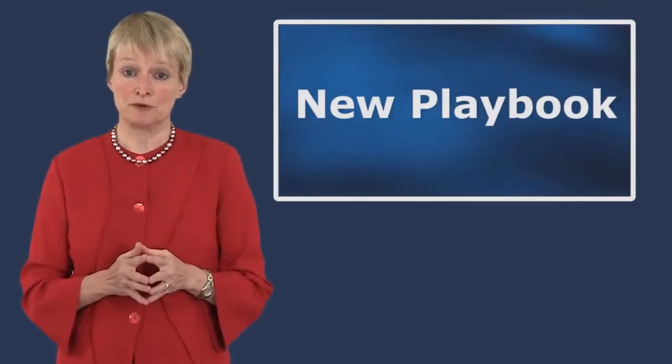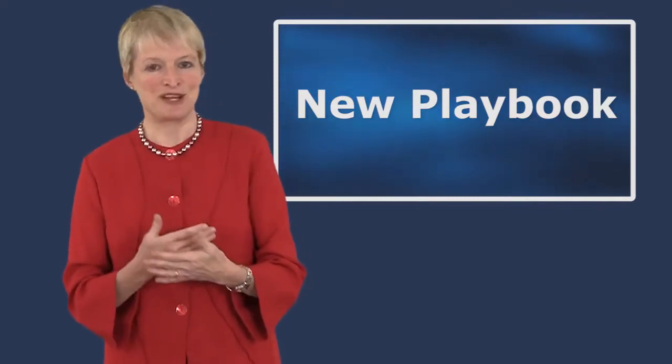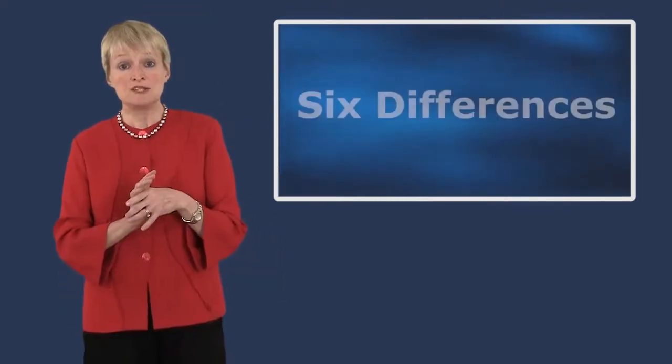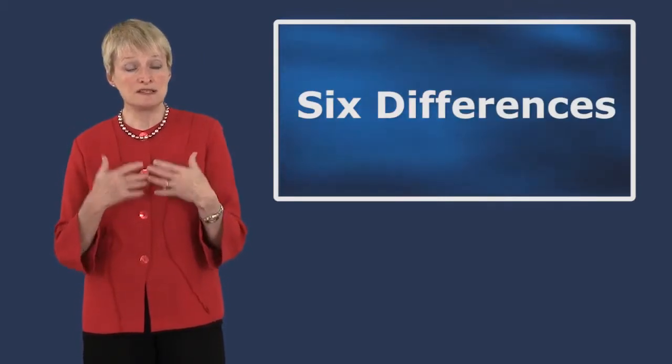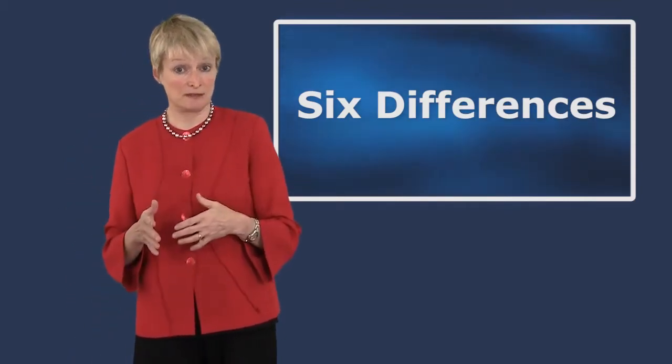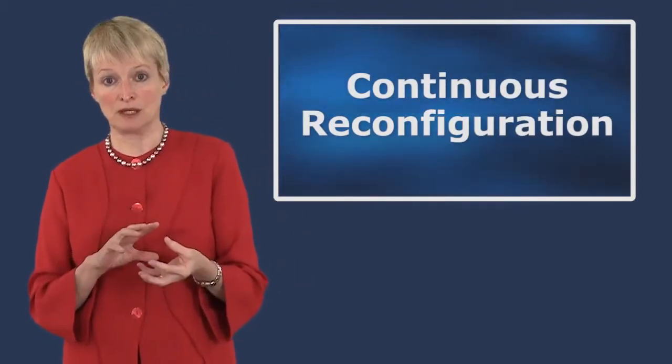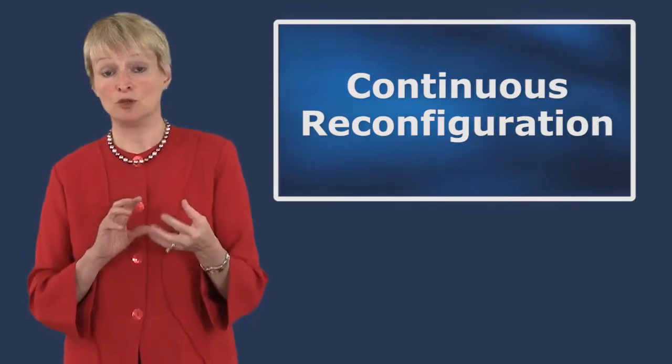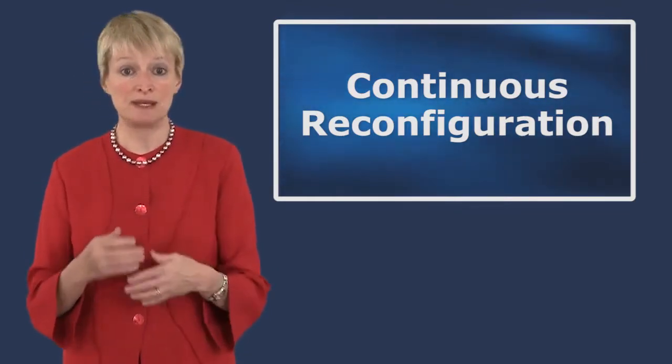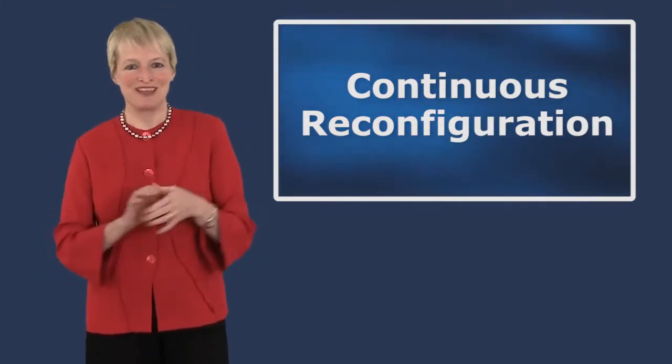If you think about a new playbook for strategy which is consistent with this idea that strategies come and go, it would look very different. I think six distinct differences in how we've thought about strategy in the past versus how we need to be thinking of it today are key. The first is to stop thinking about stability as the normal thing and start thinking about continuously reconfiguring your capabilities, your people, your assets on an ongoing basis as the necessary and normal thing.